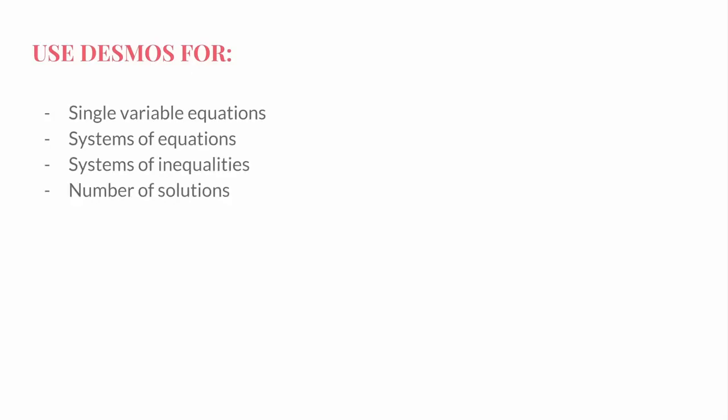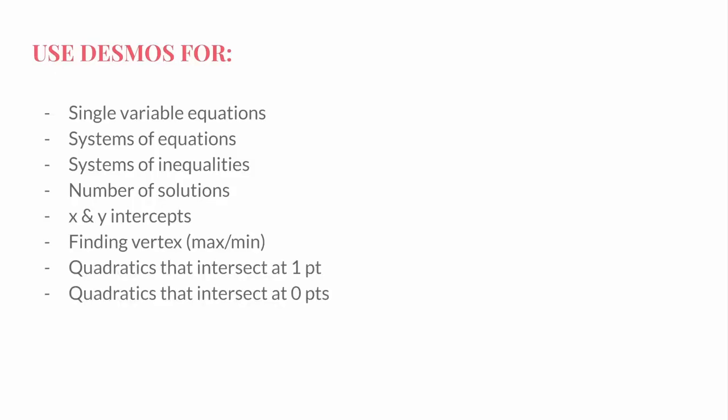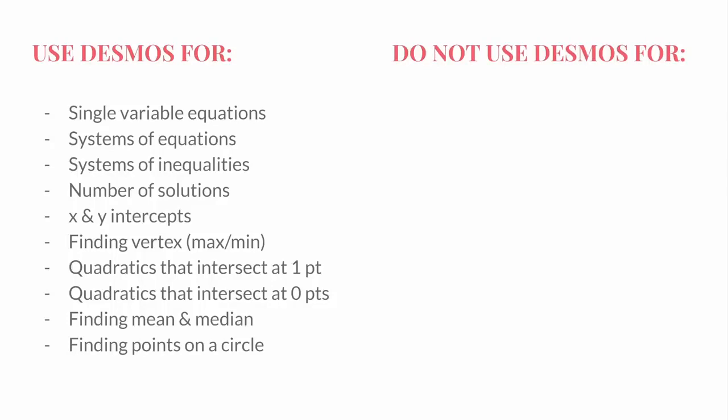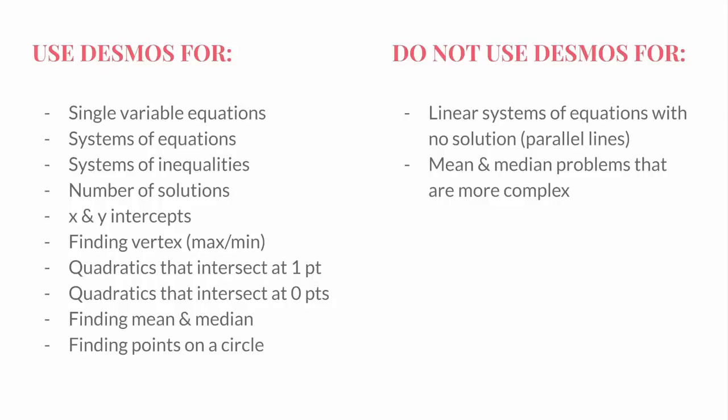And so to summarize everything from this video, you should be using Desmos for single variable equations, systems of equations, systems of inequalities, number of solutions, x and y intercepts, vertices of quadratics, quadratics that intersect a line at one point, quadratics that intersect a line at zero points, computing mean and median directly, and finding valid points on a circle. You should not use Desmos for linear systems of equations with no solution, mean and median problems that aren't literally just finding mean and median, finding the center or radius of a circle, equivalent expressions, or literally anything else on the SAT.